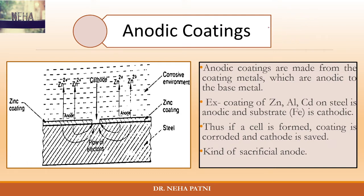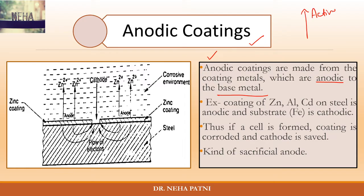Today I'm going to tell you about coatings, and one type is anodic coatings. If it is an anodic coating, that means it is made up of a coating metal which is anodic to your base metal. So if your metal is iron or steel, you coat it with a metal that is anodic to it — for example, zinc, aluminium, or cadmium on steel. Based on the galvanic series and electrochemical series discussed earlier, the metal higher in the series is active and acts as the anode, while the metal lower in the series is noble and acts as the cathode.